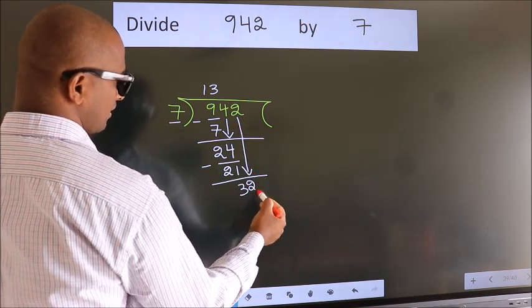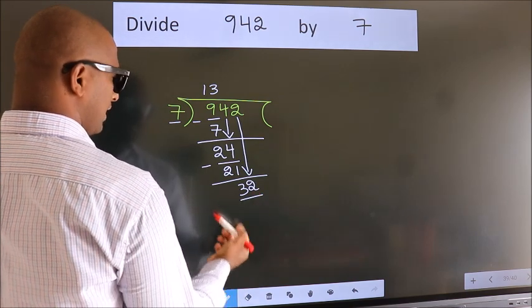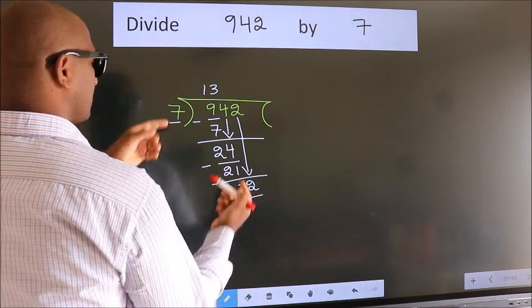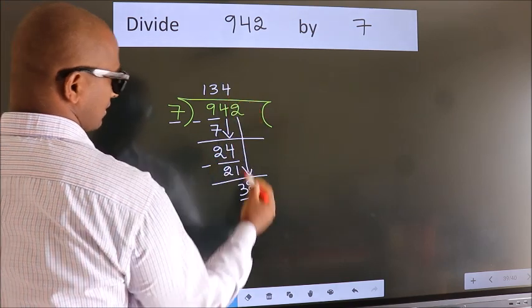So, 2 down. So, 32. A number close to 32 in 7 table is 7 fourths 28.